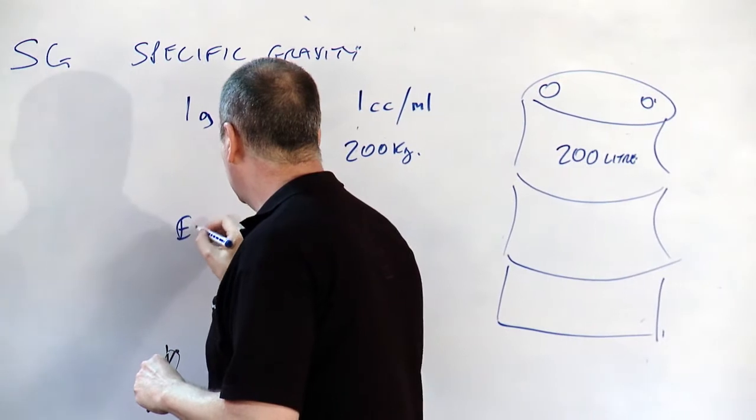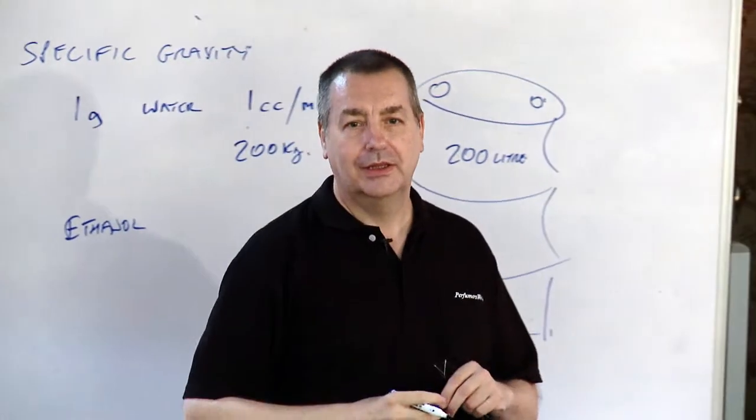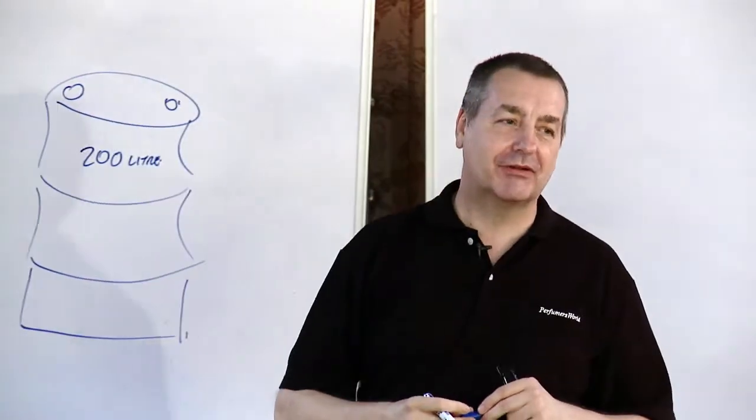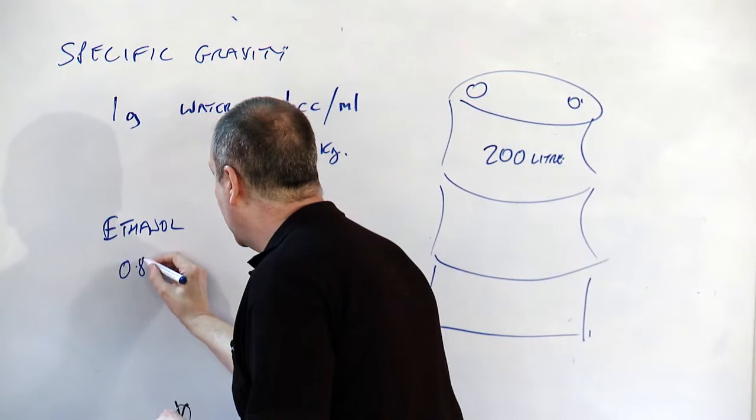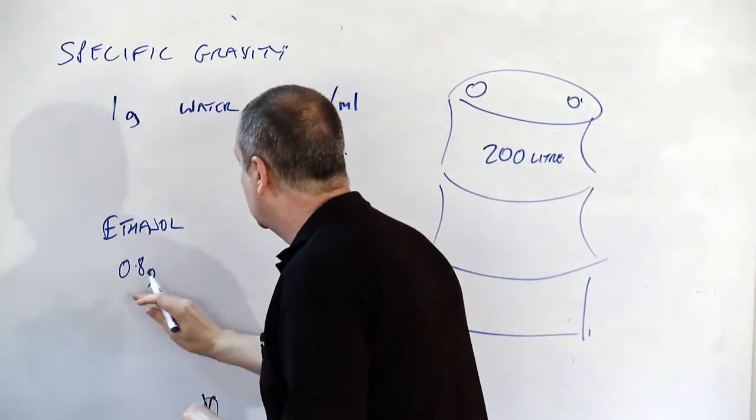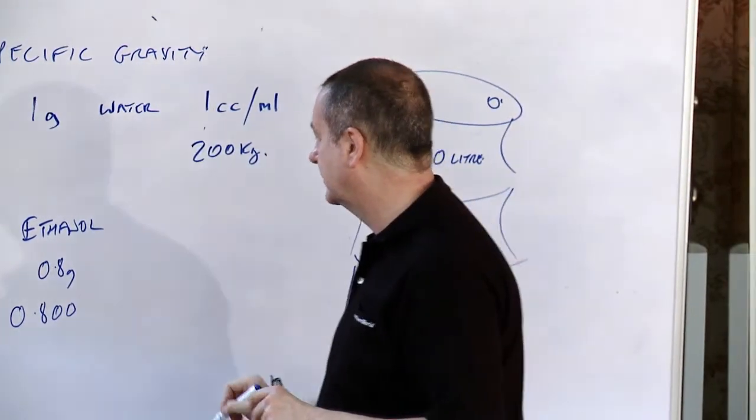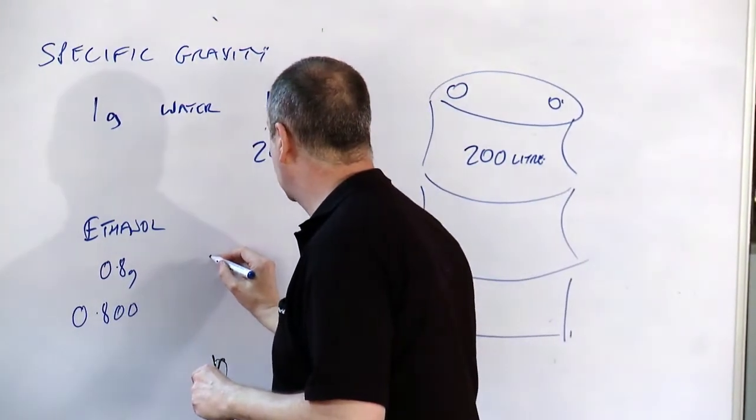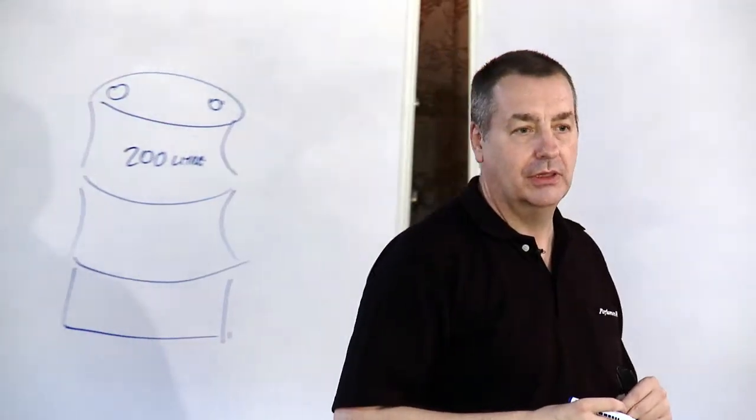How about ethanol? The specific gravity of ethanol? 0.8, yeah. So, it weighs 0.8 grams, so the number will be 0.800 for the specific gravity. And how much can I get into my 200 liter drum? 160. 160, yeah.